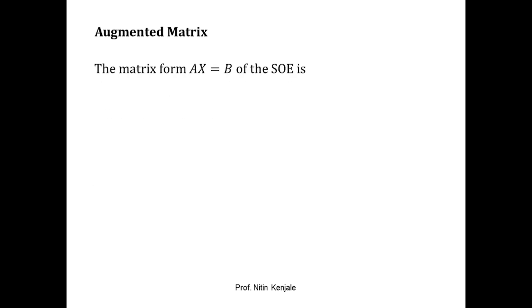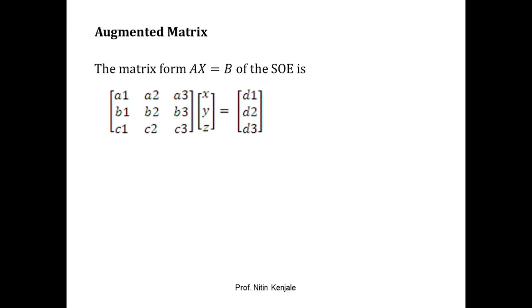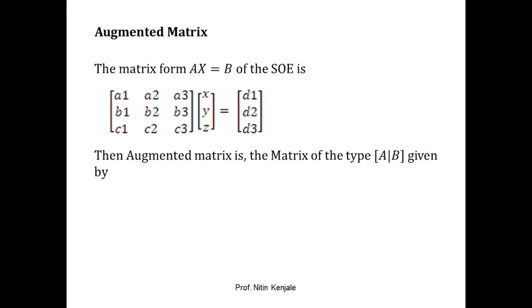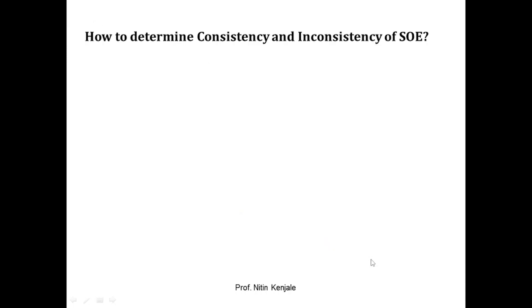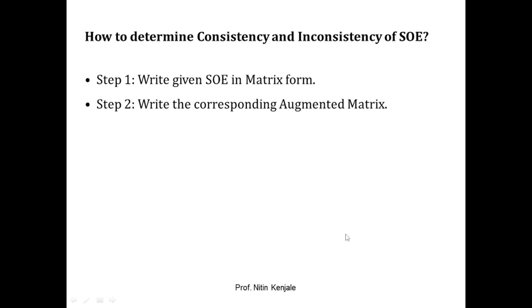Now we see what is the augmented matrix. Let AX = B be the matrix form of any system of equations. Then the augmented matrix is given by the matrix [A|B], which is a combination of the coefficient matrix and the matrix of constants. Matrix A and B are separated by a dotted line. In step one we write the given system into matrix form AX = B, and in step two we write the corresponding augmented matrix [A|B].